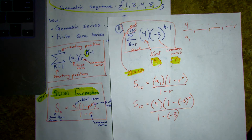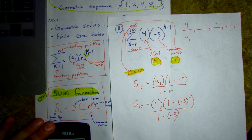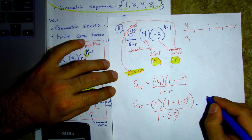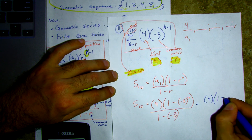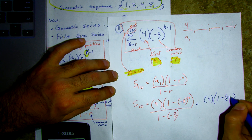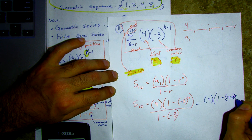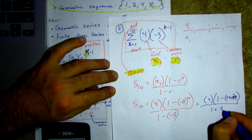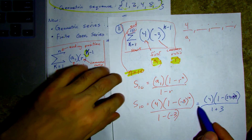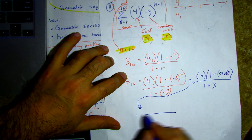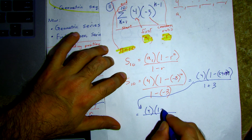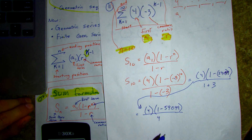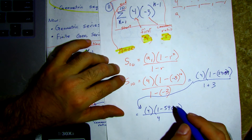Get a calculator handy. Negative 3 raised to the 10th power — I'll rewrite it: 4 times (1 minus 59,049) over (1 plus 3) on the bottom. Negative 3 to the 10th is 59,049. So on the bottom we have 1 plus 3, doing one step at a time.